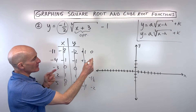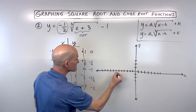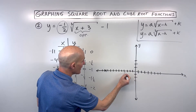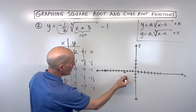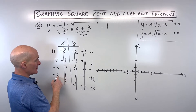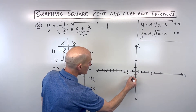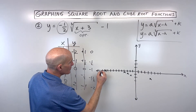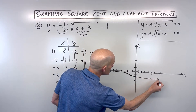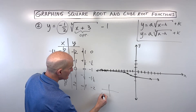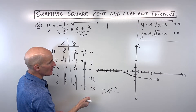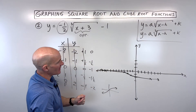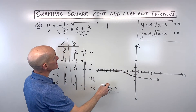Let's plot these points: (−11, 0) is right here, (−4, −½) is right about there, (−3, −1) is right here, (−2, −1½) is right about here, and (5, −2) is right about here. The graph looks like this — the parent function has that S-shape going up to the right, but this one goes down to the right because we reflected it over the x-axis, did a vertical shrink, and shifted it left 3 and down 1.